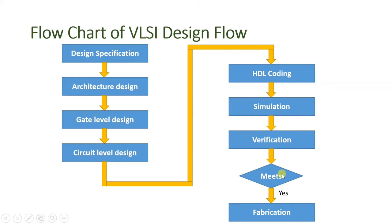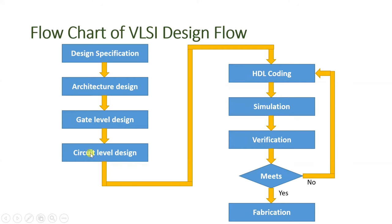But if the design is not meeting the requirements, we do some modification in the HDL coding, and again we re-simulate and re-verify that design. So in this VLSI design flow, we start with architecture design, then gate level design and circuit level design. Once we finalize circuit level design, we go for HDL coding, simulation, and verification. We repeat this process until we meet the requirements, and once we do, we send it to fabrication.